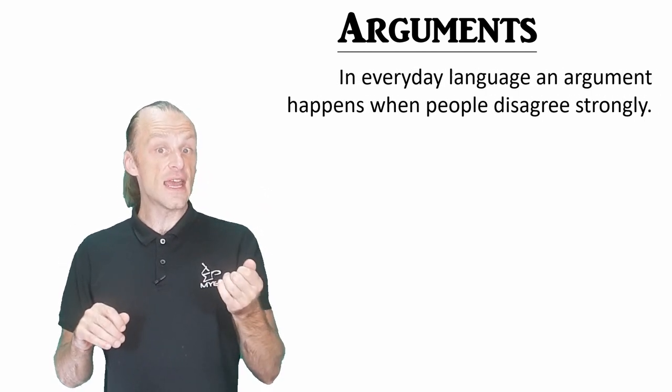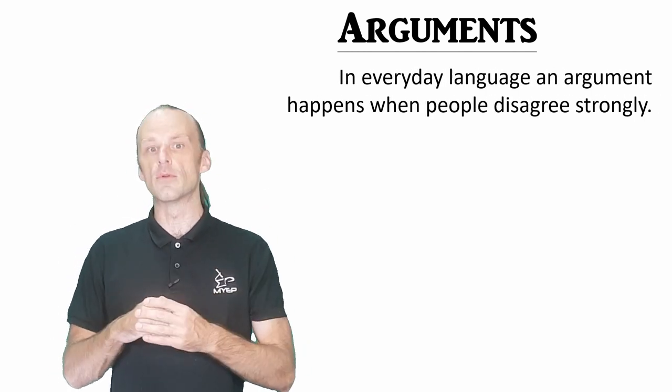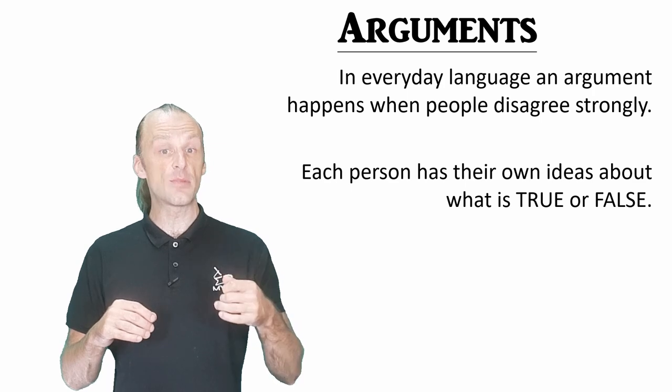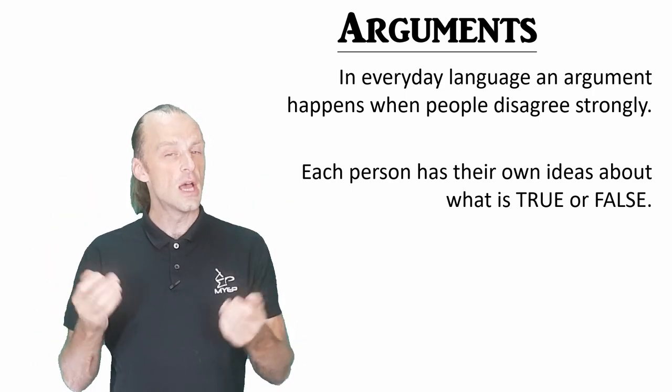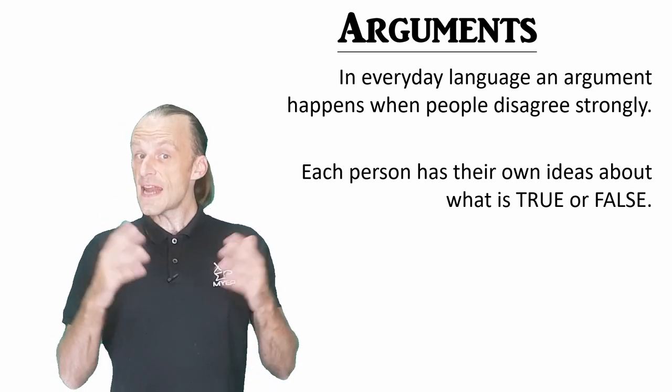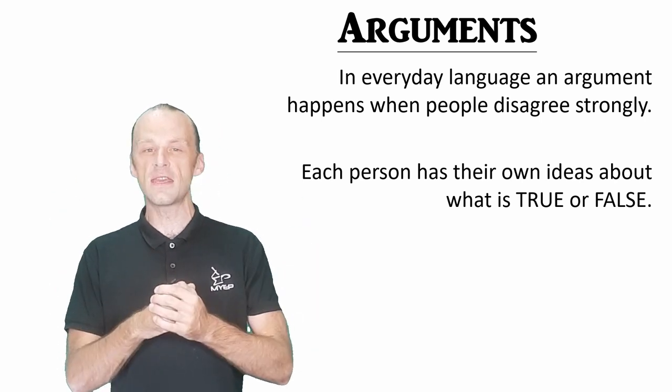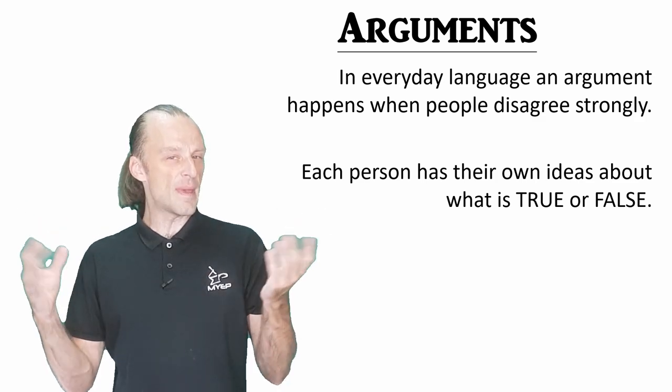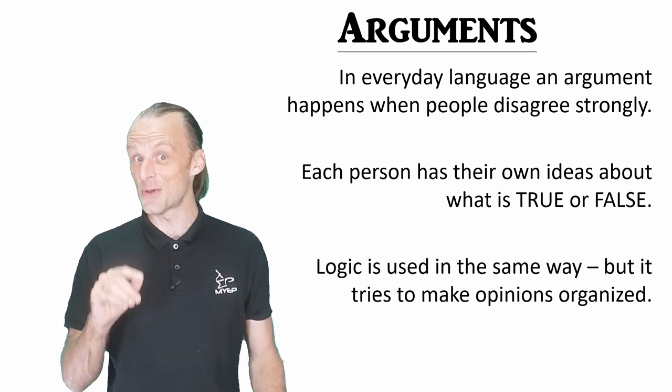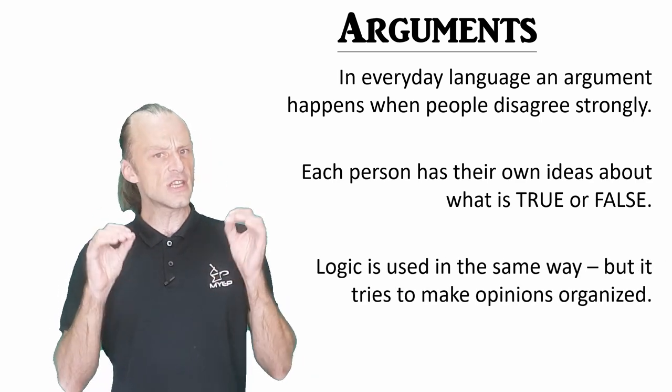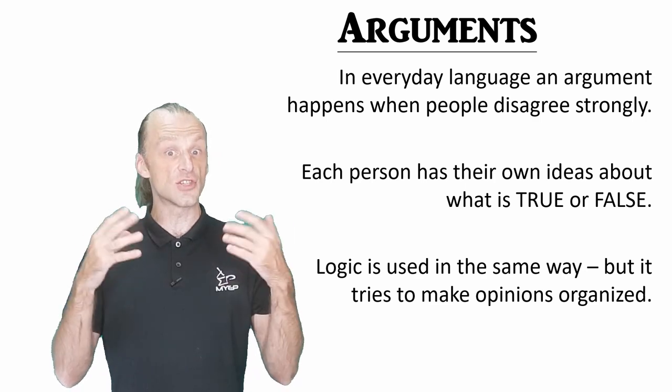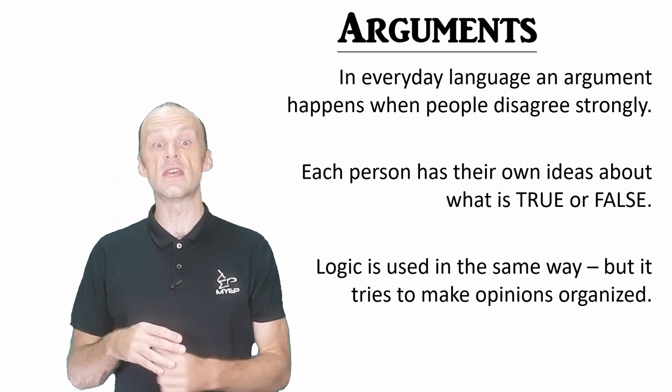Now let's move on to arguments. In everyday language, an argument is when two or more people disagree strongly, and often loudly, about something. These arguments happen because people end up with different ideas about what is true or false. So an everyday argument comes from a disagreement in people's logical arguments. In everyday situations, people aren't usually thinking about the logic behind what they're saying. Maybe it would be better if we did this more often, but logic is not so different. Logicians can disagree loudly about things too. But logic does try to be more organized, so you know exactly what you are arguing. And we do this by having the structure to our argument, which we already mentioned in the earlier parts.